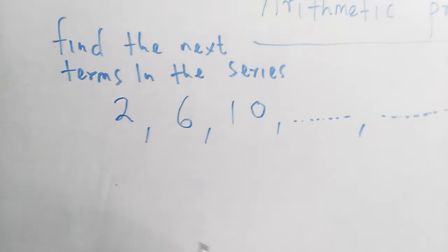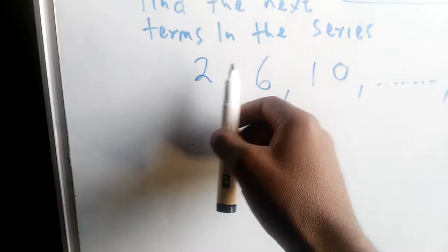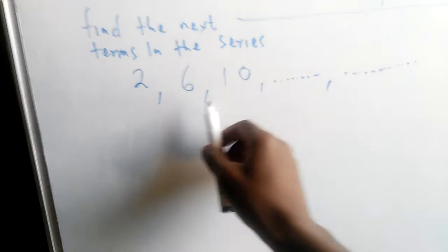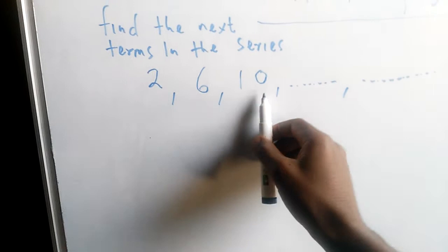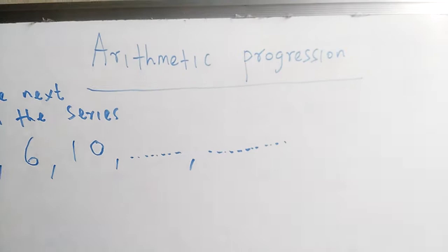We want the next terms. We are using grade 7 work, just looking for the common difference. In this case, there is a common difference of 4. So 4 plus 2 is 6, 6 plus 4 is 10, 10 plus 4 is 14, 14 plus 4 is 18.